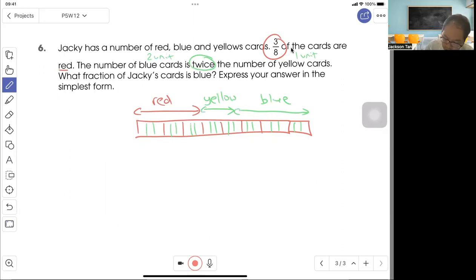So they ask what fraction of Jackie's cards is blue. So the answer is 10 out of - 3, 6, 9, 12, 15, 18, 21, 24 - 10 out of 24. In simplest form, 5 out of 12. So this is one of the methods.